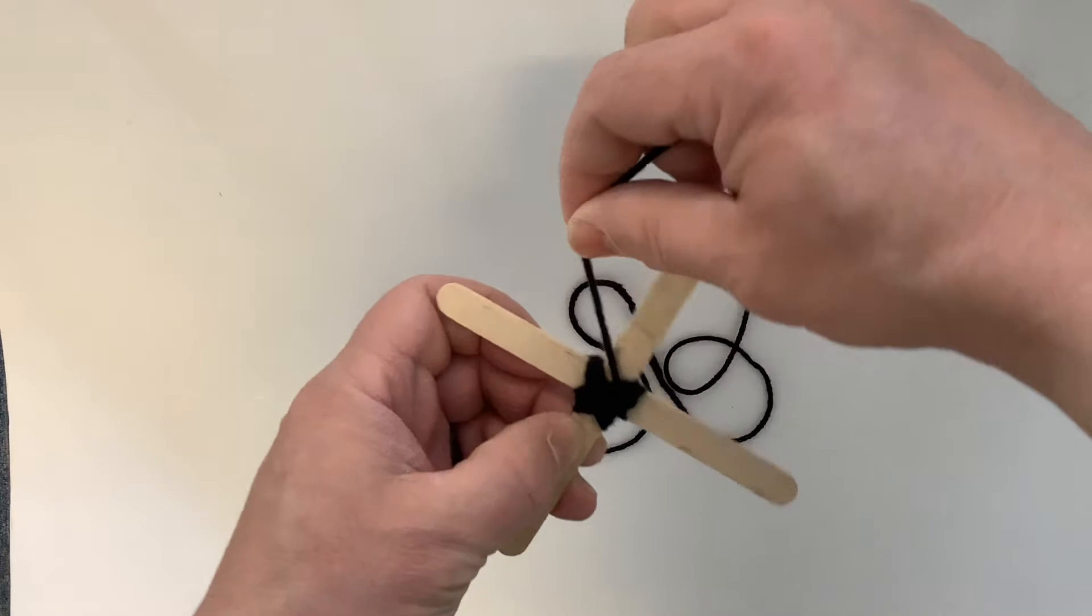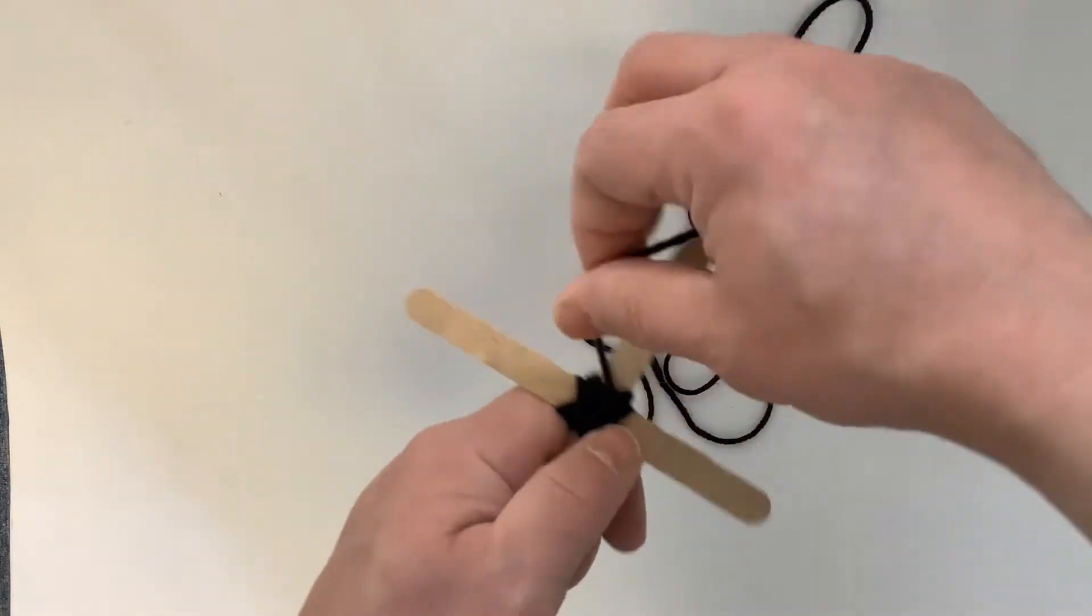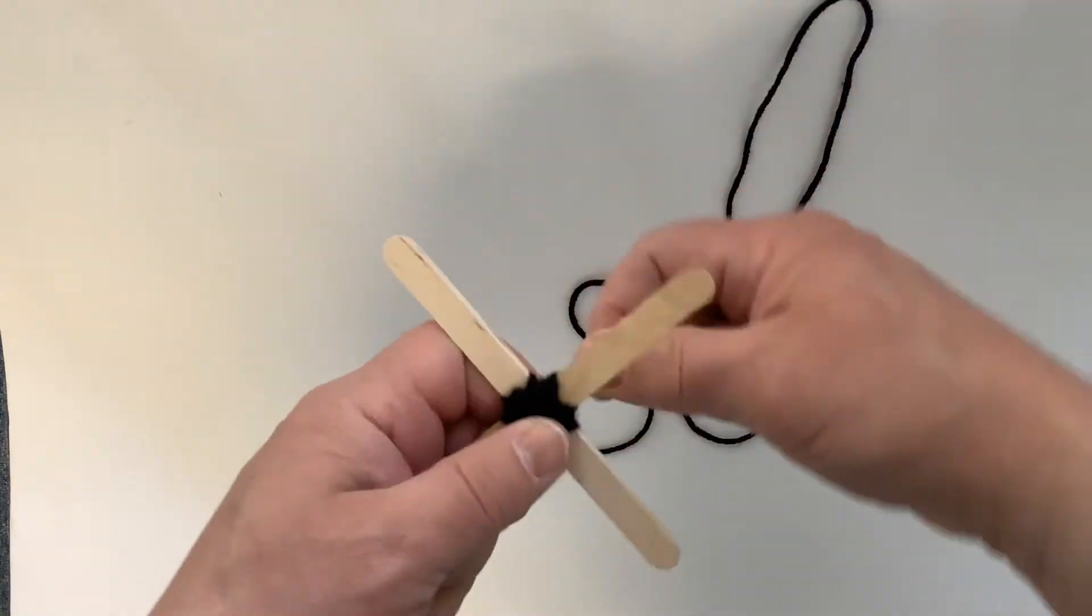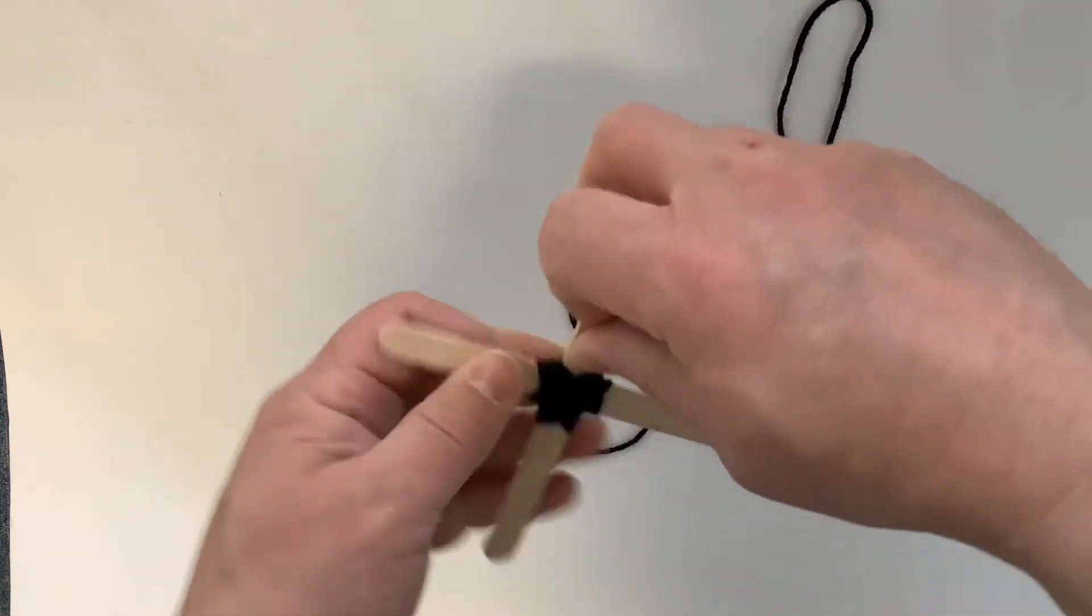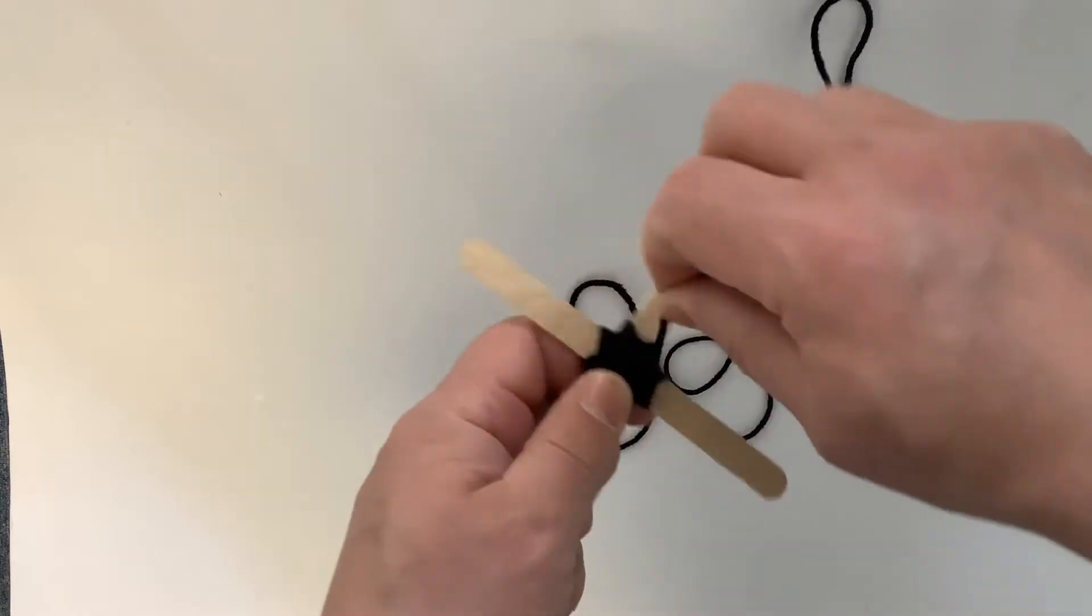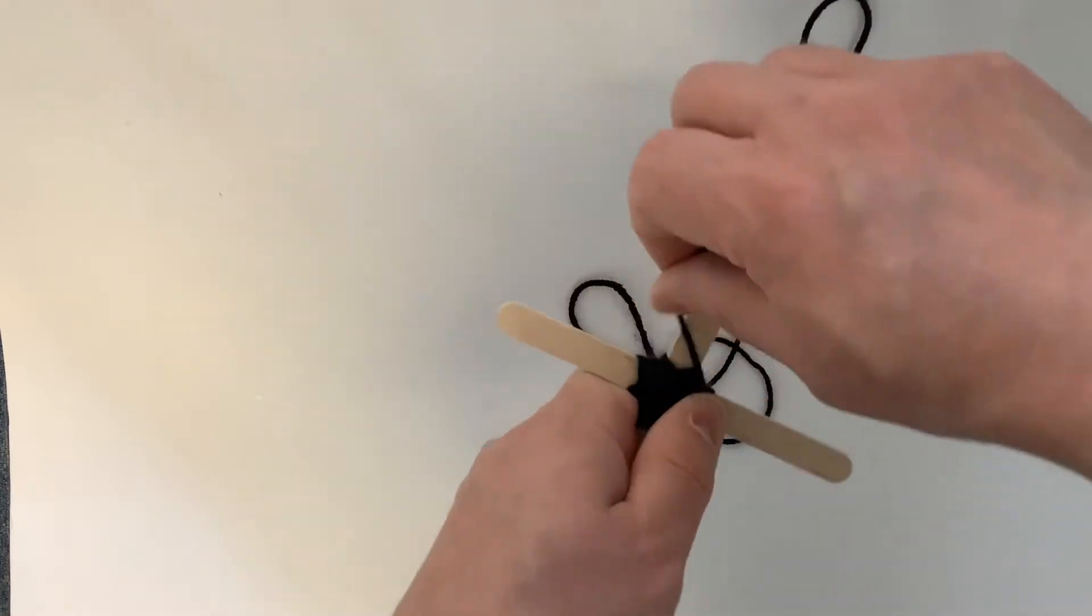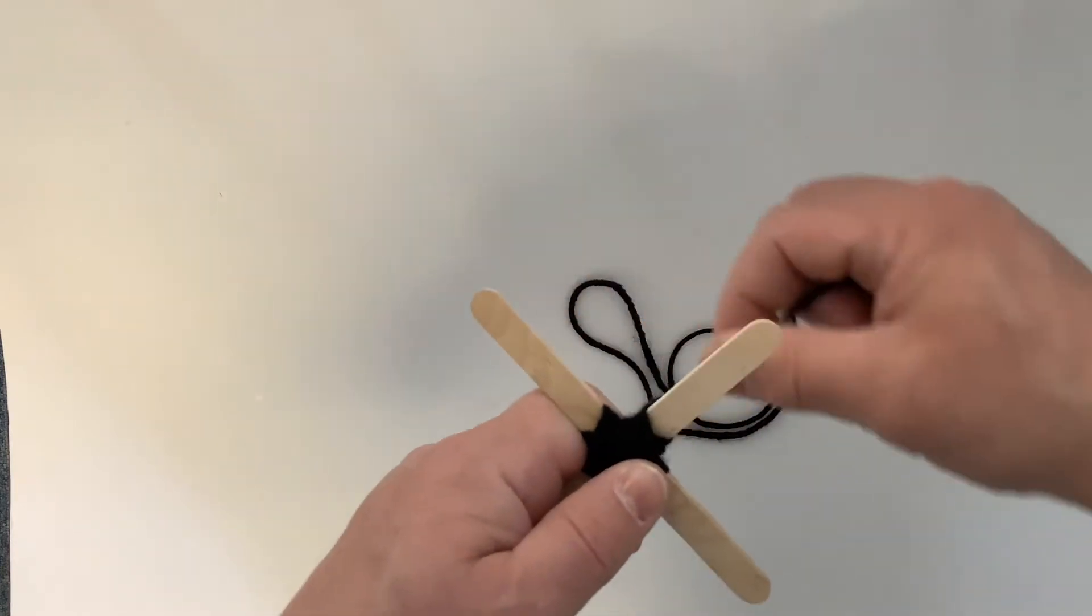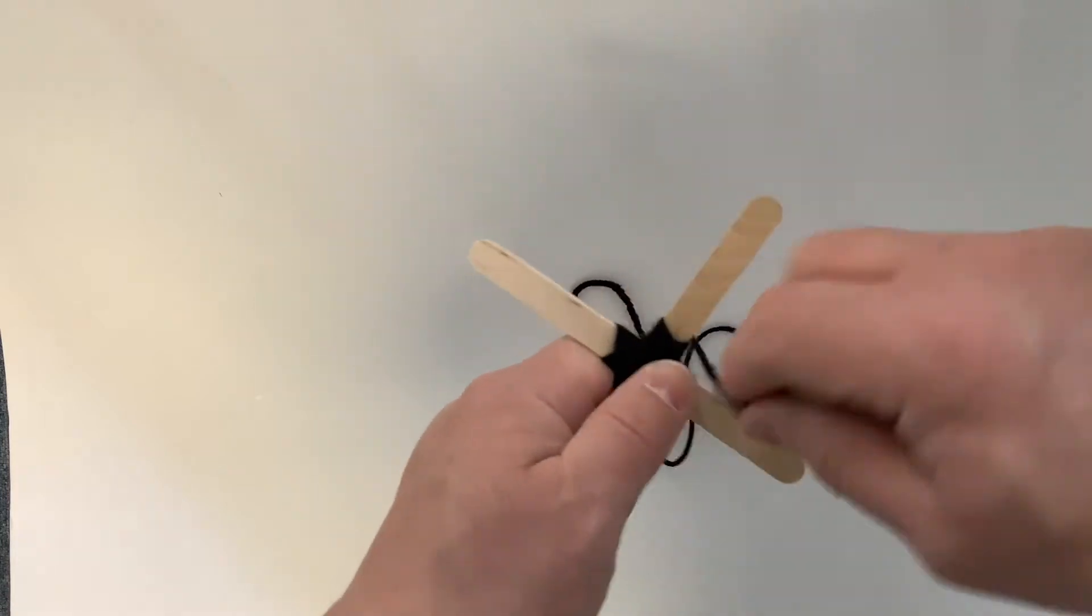And then you're going to wrap around the back of each arm, and then diagonally across to the front of the next one in a circle. And as you go around, you're going to move a little further out on each arm, keeping it fairly tight. You can see I use my left thumb to hold the yarn in place and then wrap with my right hand.